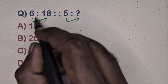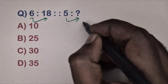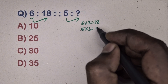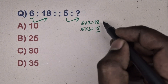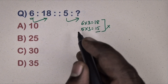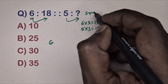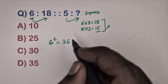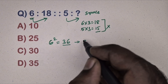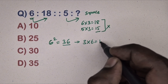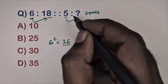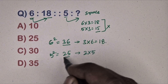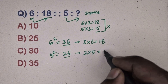Options are given. First try: 6 × 3 = 18, and 5 × 3 = 15, but 15 is not in the options, so this is wrong. Use the square method: 6² = 36, multiply the digits of 36 to get 18. Same way, 5² = 25, multiply individual digits: 2 × 5 = 10. So 10 is the correct answer.